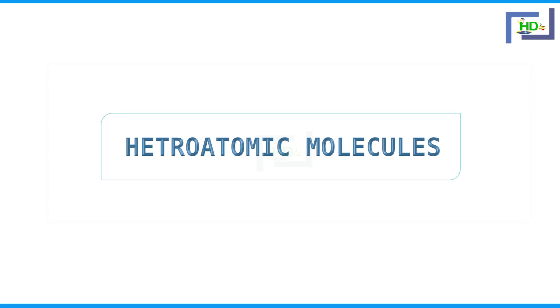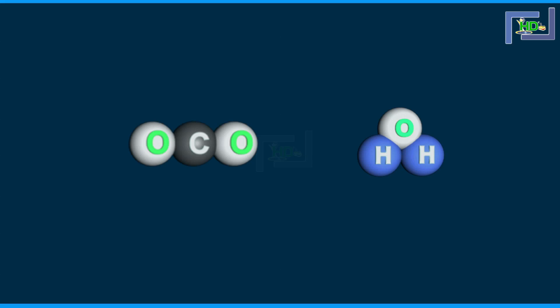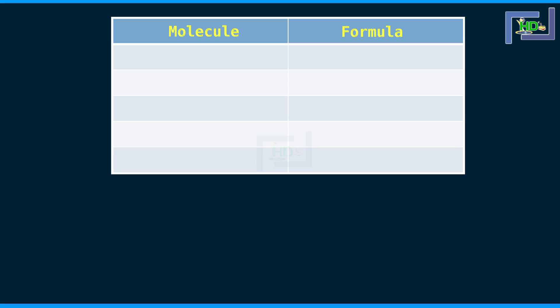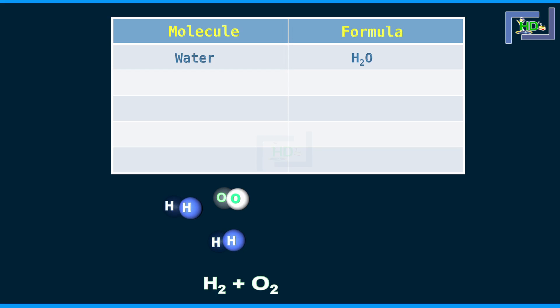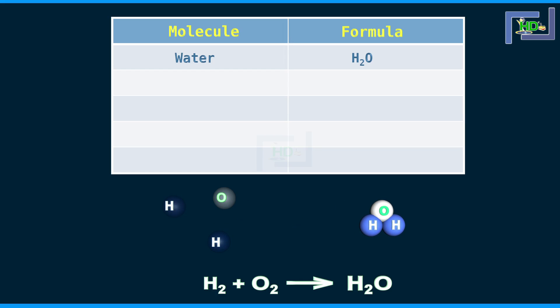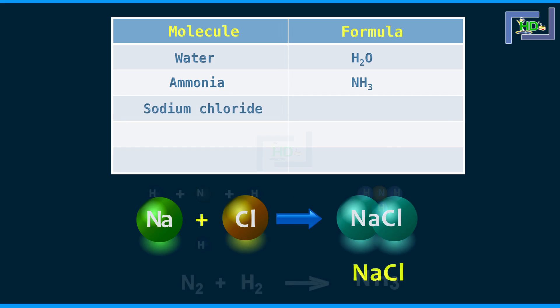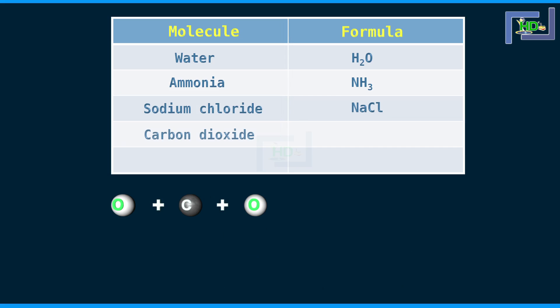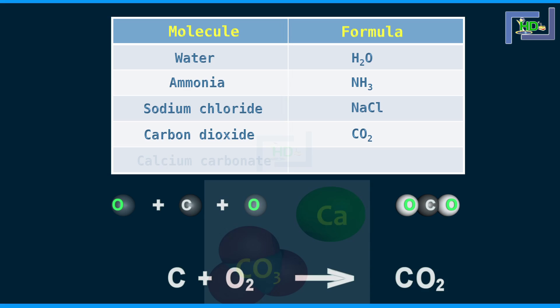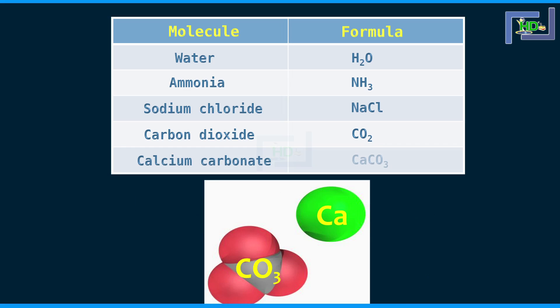Heteroatomic molecules — 'hetero' means different. These are molecules which have atoms of more than one element in the molecule. Examples of heteroatomic molecules: water H2O, formed with hydrogen and oxygen; ammonia NH3, formed with nitrogen and hydrogen; sodium chloride NaCl; carbon dioxide CO2; calcium carbonate CaCO3.